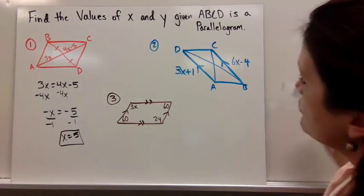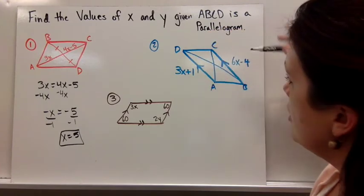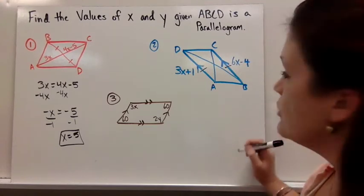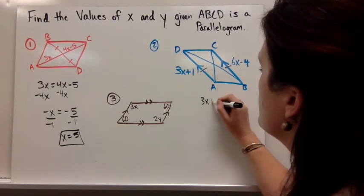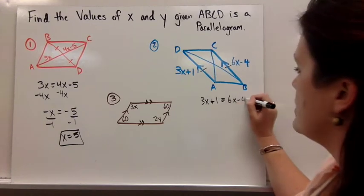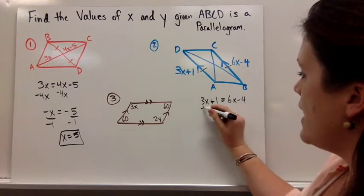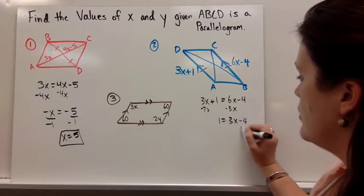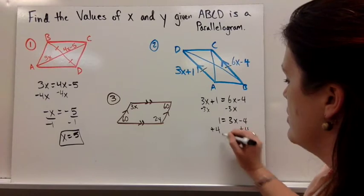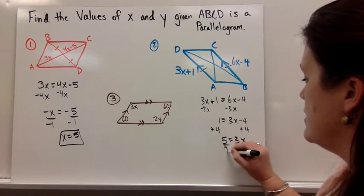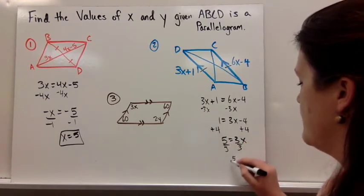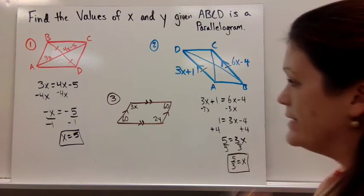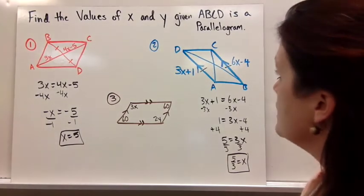For number two, if we're told ABCD is a parallelogram, then we would know that these sides are parallel, so they would also have to be congruent. So we could set 3x plus 1 is equal to 6x minus 4. We could subtract 3x on both sides. So 1 equals 3x minus 4. We can add 4, so 5 would equal 3x, and then divide by 3, so 5 thirds equals x. It doesn't necessarily have to be an integer. It could be a fraction. So that's our answer for number two.